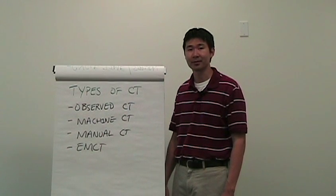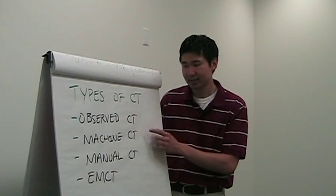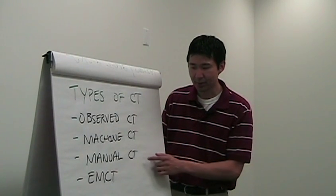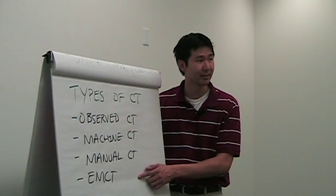Now there are four different types of cycle times that we'll be reviewing. First is the observed cycle time, second is the machine cycle time, third is the manual cycle time, and last is the effective machine cycle time.